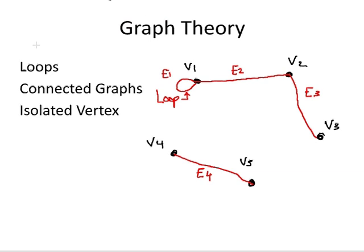So a connected graph describes the situation where there are enough edges so that there is a path between any two pairs of vertices. This graph is not connected right now. If I was to add in an edge here, e5, this is now a connected graph.